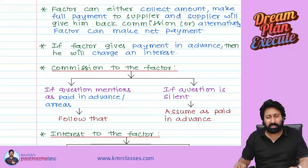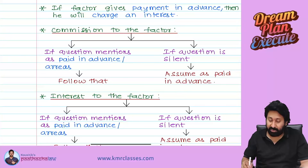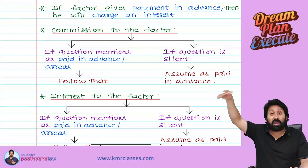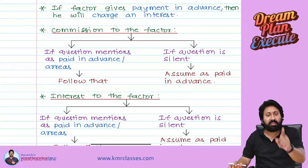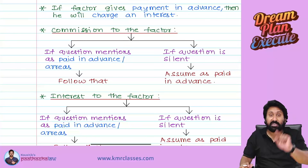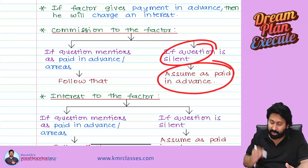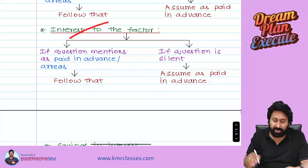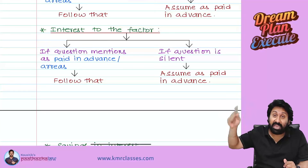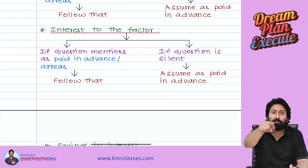If the question is silent about when commission is paid, assume it is paid in advance — upfront before the factor starts work. If the question clearly states it is paid on collection, follow that. Regarding interest: the factor pays you 70–75% of the debtor amount today, even though you would normally receive it after three months. Because you are receiving it as an advance, you have to pay interest to the factor on that advance amount.